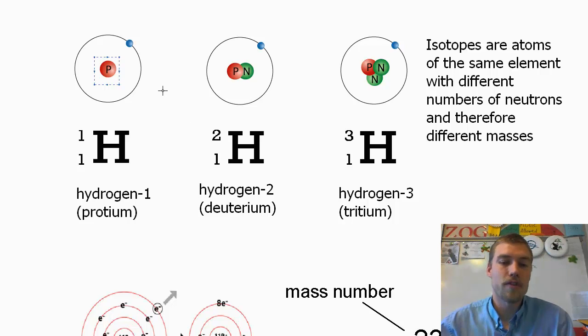Now if you've ever looked at the periodic table, you'll notice that for hydrogen it does not just say 1, it says 1.008. And that 1.008 is because these different isotopes of hydrogen occur in different abundances.